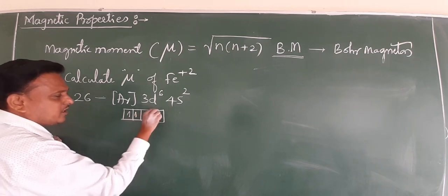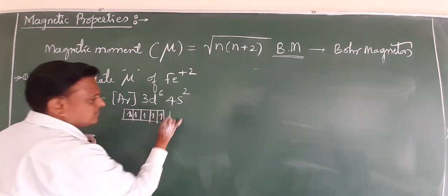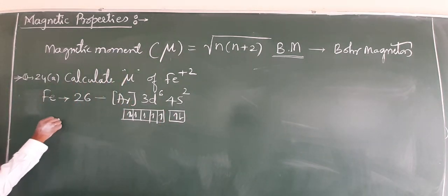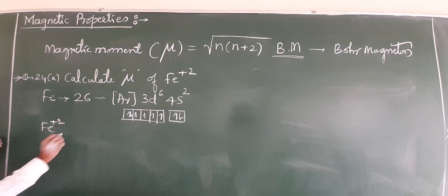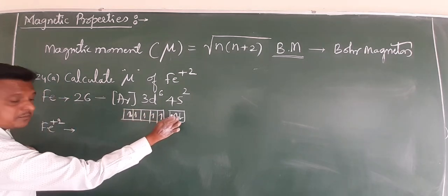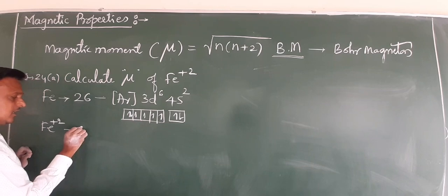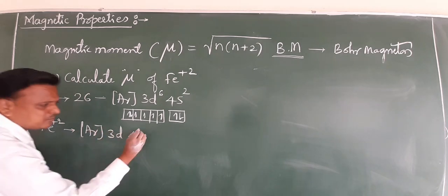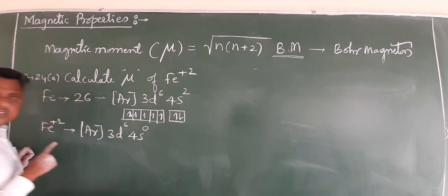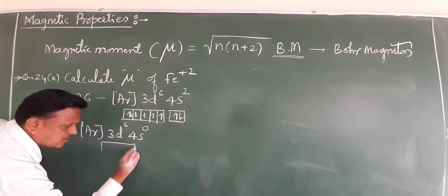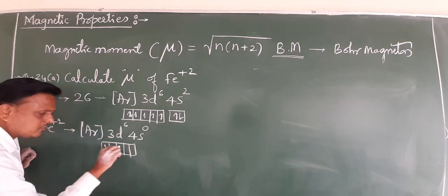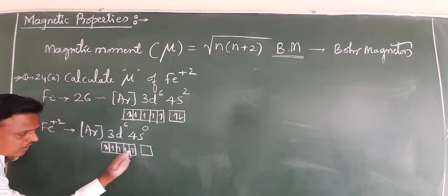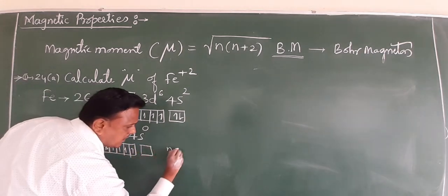Drawing the orbital diagram for 3d⁶: we have 1, 2, 3, 4, 5 unpaired electrons filling the d orbitals, then one paired electron. Counting the unpaired electrons: 1, 2, 3, 4. Therefore, n = 4. Four unpaired electrons means it is paramagnetic.